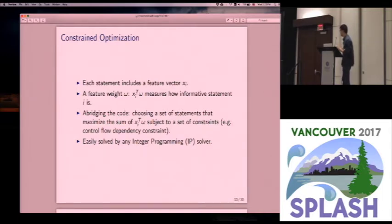So here we can just assume each statement includes a feature vector xi, and we got a weight feature vector omega, so that the inner product of this feature vector and this weight measures how informative each statement is. Then we can formalize our source code abridgment problem as choosing a subset of statements in the original node set of that graph to maximize the sum of this inner product, subject to a set of constraints. The constraints can be anything nested in the static program analysis, for example, control dependency between two statements. And more details about those constraints can be seen in our paper. But I would like to make a note here is that such a constraint optimization can be easily solved by any binary integer solver in real time, which makes it possible to use our tool for any in-time tasks.